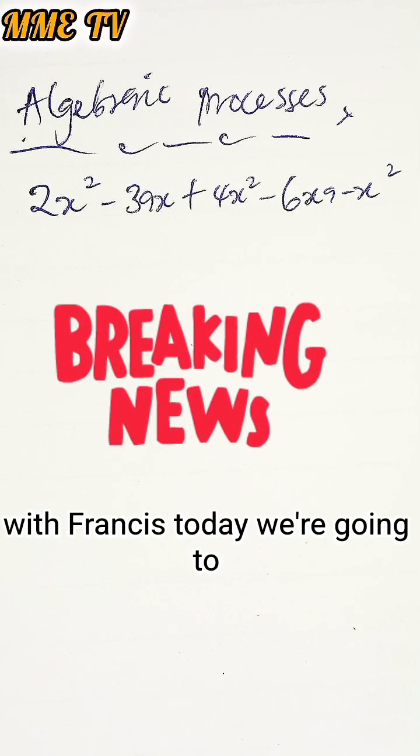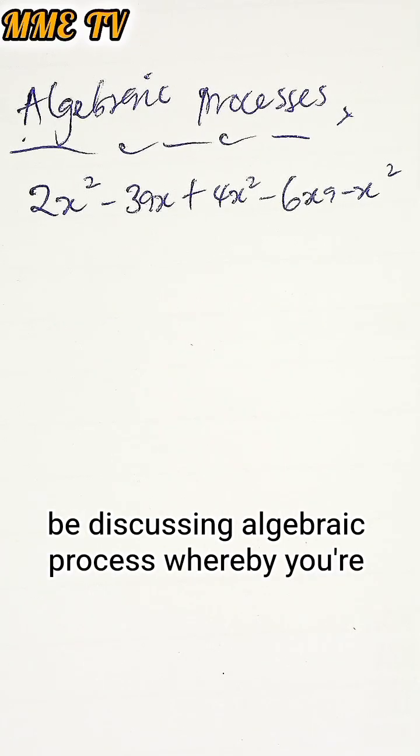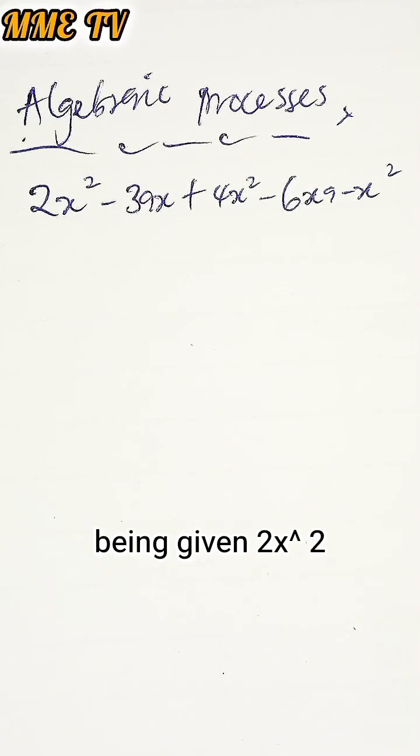Welcome to Math Medicine with Francis. Today we are discussing an algebraic process. You are given 2x² - 3ax + 4x² - 6ax - x² and are asked to simplify this.